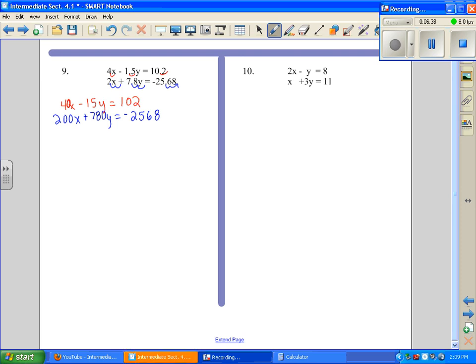Although those seem like big numbers, it's not too bad. We can choose to work with the x value or the y. I'm more familiar with multiples of 10, so I'm going to eliminate x. I need this to be negative 200. How can I make 40 become negative 200? I would multiply everything in this equation by negative 5. Distribute that out: negative 200x, plus 75y, and negative 5 times 102 is negative 510.